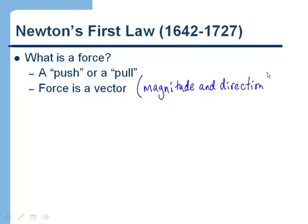When we specify a force we have to say not only how big the force is but in what direction it acts. As an example, if I have an object and I'm exerting a force of four Newtons — the Newton is the unit we use for force — acting to the right, that would be the force.